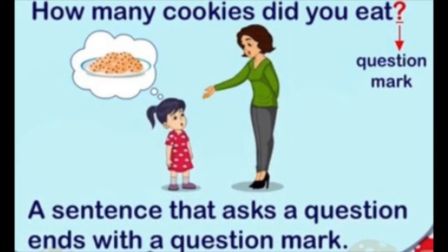Now look at this picture. 'How many cookies did you eat?' The lady is asking the girl, 'How many cookies did you eat?' — asking. So what is at the end? A question mark. Now if the girl answers, 'I ate five cookies,' will it be a question mark or a full stop? Then it will be a full stop. So do you see here? H in 'How' starts with a capital letter and at the end there is a question mark.